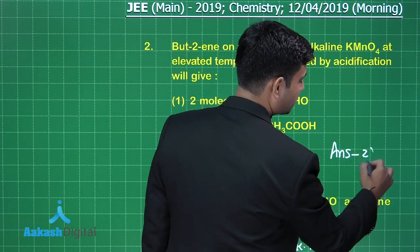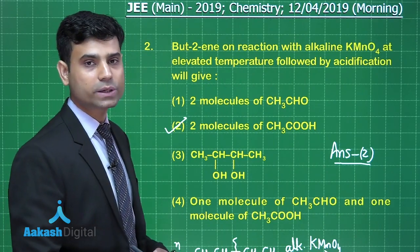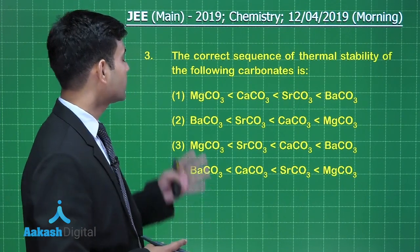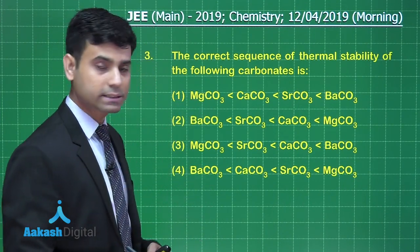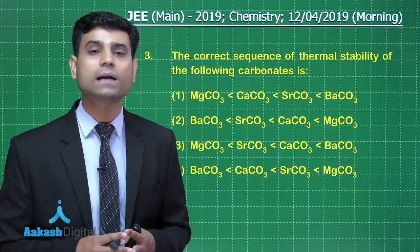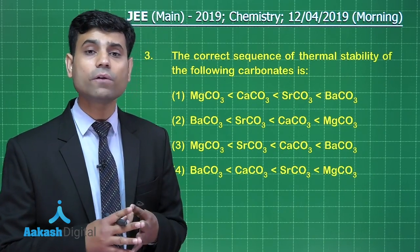The correct answer is given in option 2, so the correct answer for this question will be option 2. Now let's move to the next question. This is the next question. It says the correct sequence of thermal stability of the following carbonates is. Students, we can see here these are all alkaline earth metal carbonates.